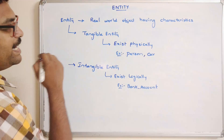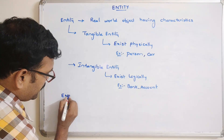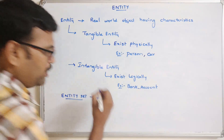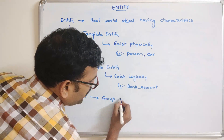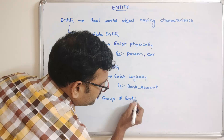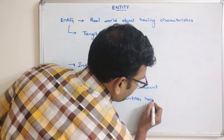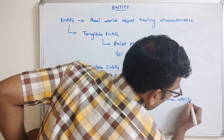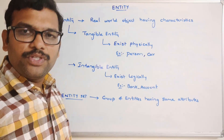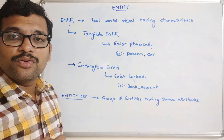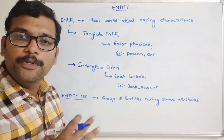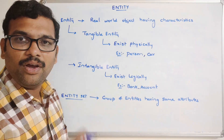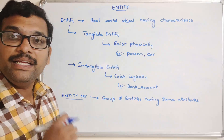Now, what is meant by an entity set? An entity set is a group of entities having the same attributes. All the rows, tuples, or records of a table come under this entity set.